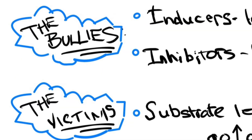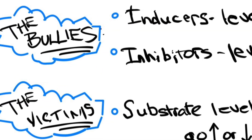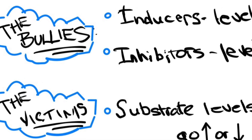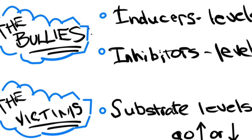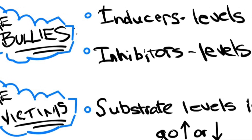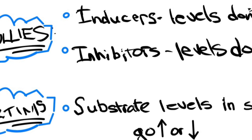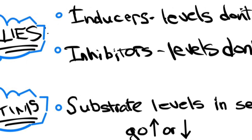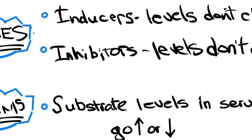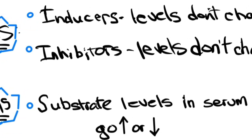Inducers and inhibitors are the bullies, while the substrates are the victims. We get toxicity of the substrate or inefficacy. The inducers and inhibitors' levels don't change, but the substrate levels do — they're getting beat up because they're the victims; the levels go up or down.